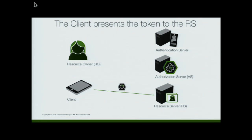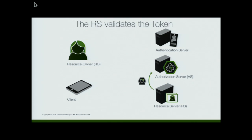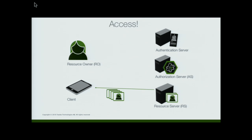So when the client sends this token to the API, it represents the user in a sense that it can check with the authorization server and see: was this a real user? Do I know this one? Is it supposed to access me? Is it still valid? Did it happen recently enough? And so on. And if so, it will respond with all your pictures.